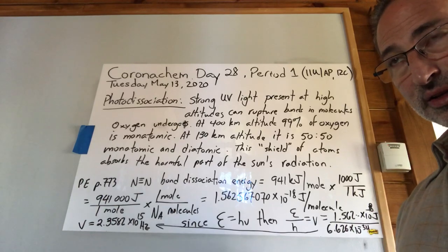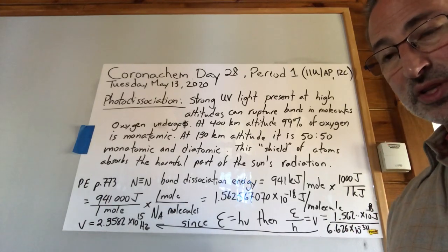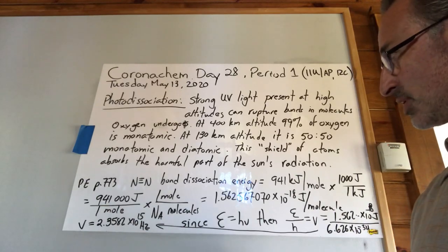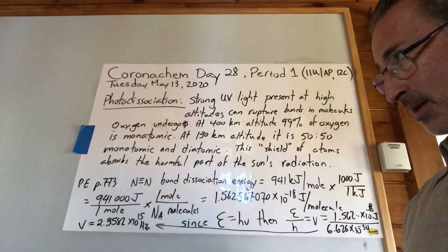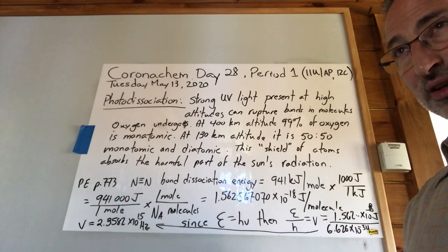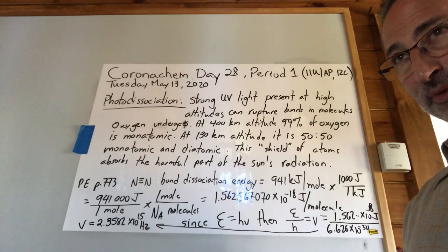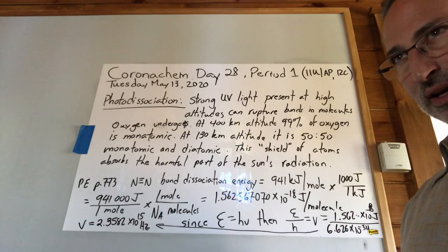They've traversed the distance between the surface of the sun and the earth, which is about 93 million miles on average, because the earth does vary in its distance from the sun as it orbits. Paradoxically, the earth is usually closer to the sun in the wintertime and further in the summer, which is an interesting observation.